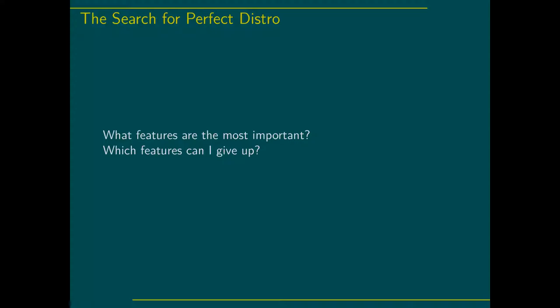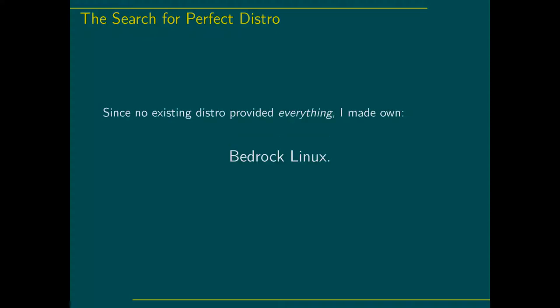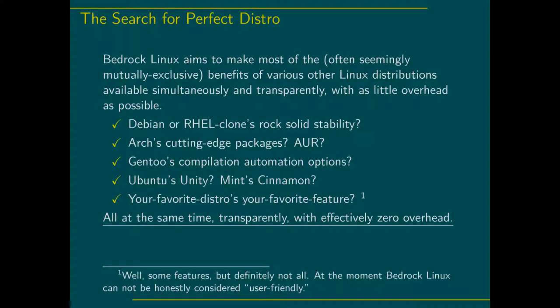I was thinking about which distro I want. You can make lists of pros and cons, do your weighting. But I didn't like anything because I want everything. I want everything on that list. So since no distro did that, I made my own called Bedrock Linux. It does those things — it's rock-solid stable based on something like Debian or RHEL, while also giving you cutting-edge packages from Arch or the AUR.